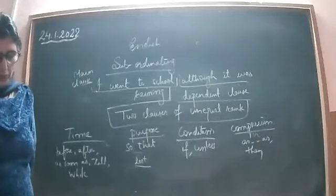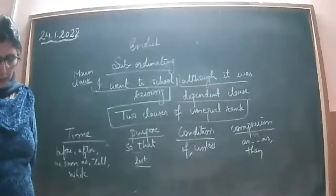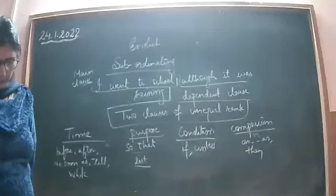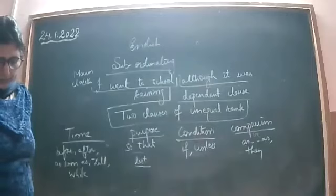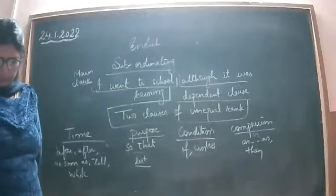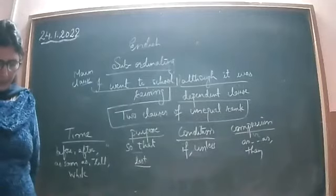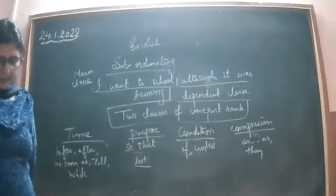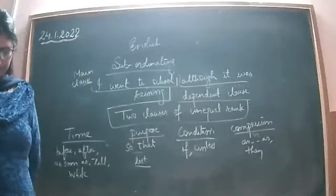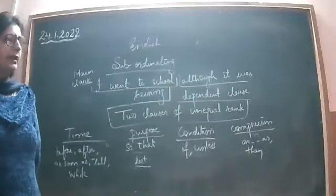Sixth: 'The child smiles so sweetly that his mother relented to buy him a large bar of chocolate.' — 'so...that' is a subordinating conjunction of result. Seventh: 'Saran was quite badly hurt during the game yet he decided to continue playing.' — 'yet' is a coordinating conjunction.